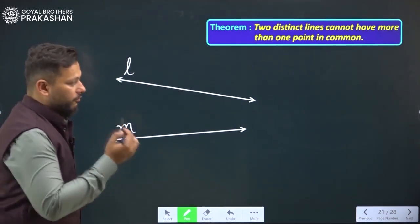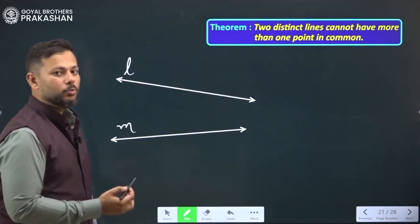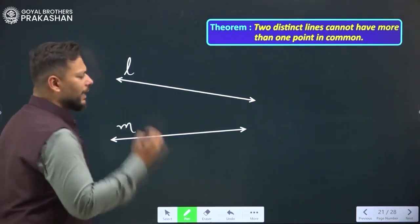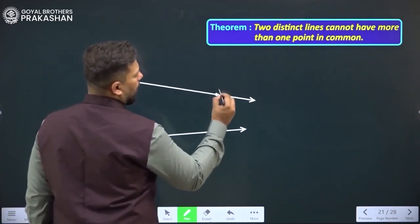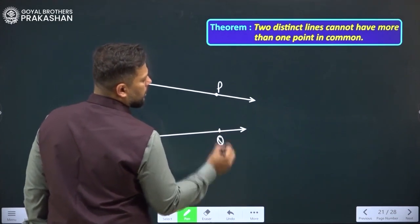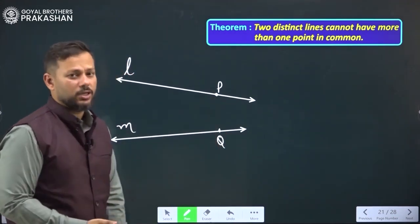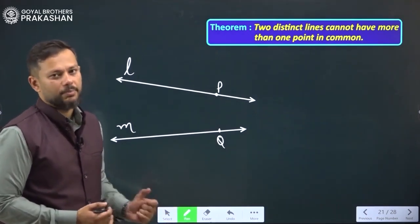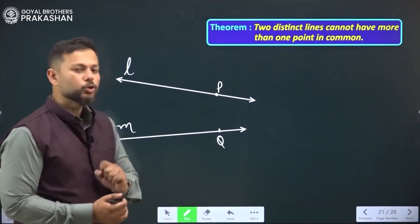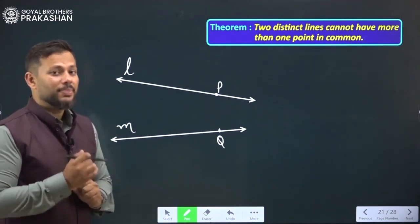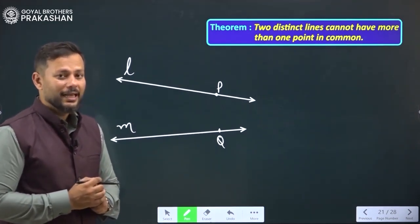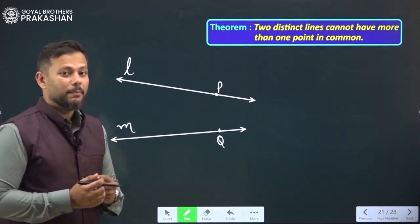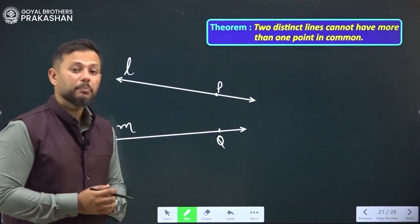Now, for the time being, let us assume that these two lines are intersecting at two distinct points. Let us say point P and point Q and assume these points to be point of intersection, which does not appear to be intersecting over here, but we have just assumed it for the time being. As there are two points of intersection between two lines, that means what does it suggest? It suggests that there are two lines passing between two distinct points.